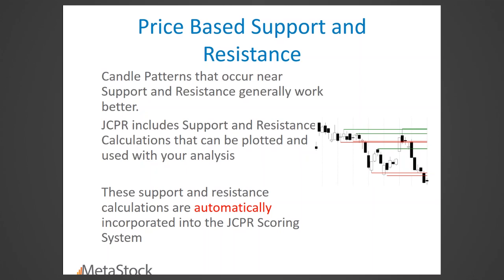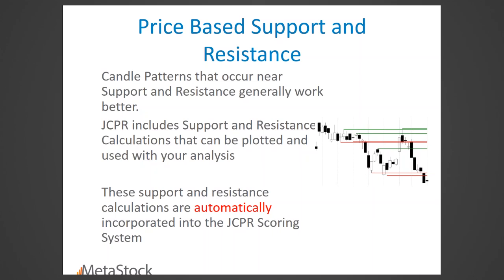In JCPR, support and resistance lines are drawn automatically — usually four support lines and four resistance lines, depending on how the data is moving. They're based on the highs and lows of candlesticks on a short-term basis. What you want to find is a bullish reversal pattern in a downtrend reaching a support line — the closer it is to the support line, the more credit it gets. Likewise, a bearish reversal pattern should be up against a line of resistance.